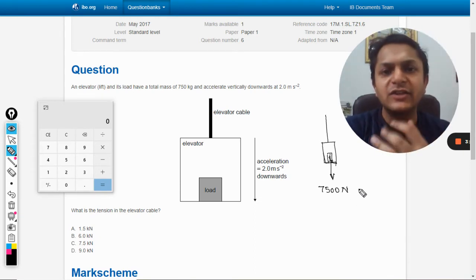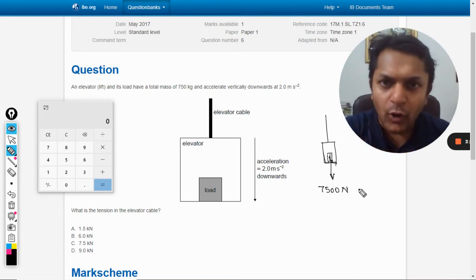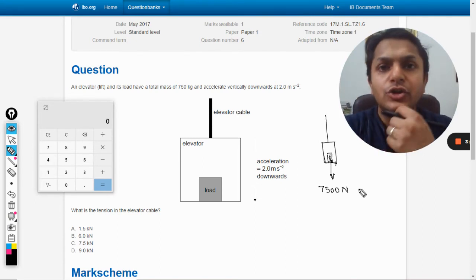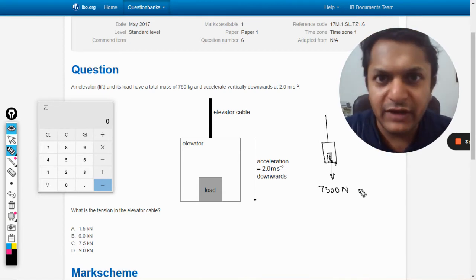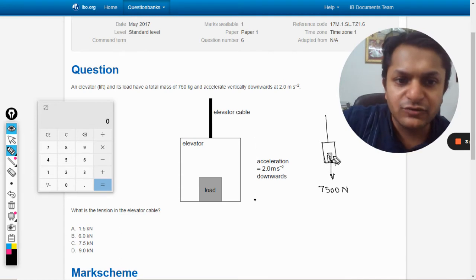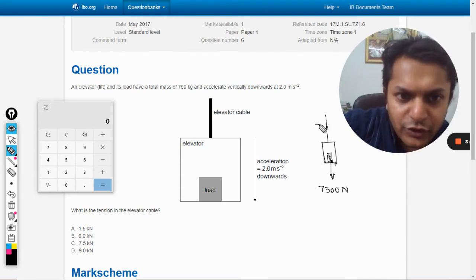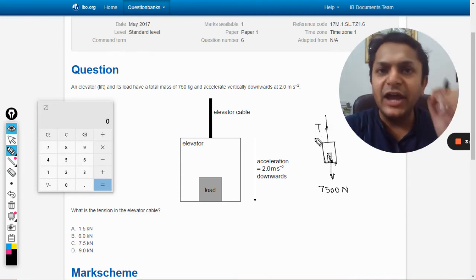This is the total weight acting downward, pulling this weight down. If it is allowed to move according to this force, the acceleration would equal acceleration due to gravity, 9.8 meters per second squared, but it is not allowed for that. Now T is the tension in the string.